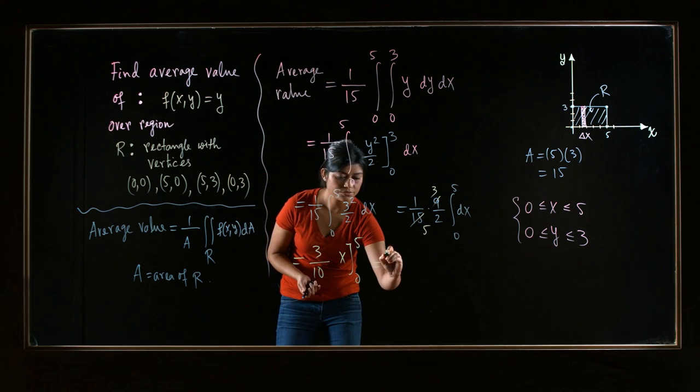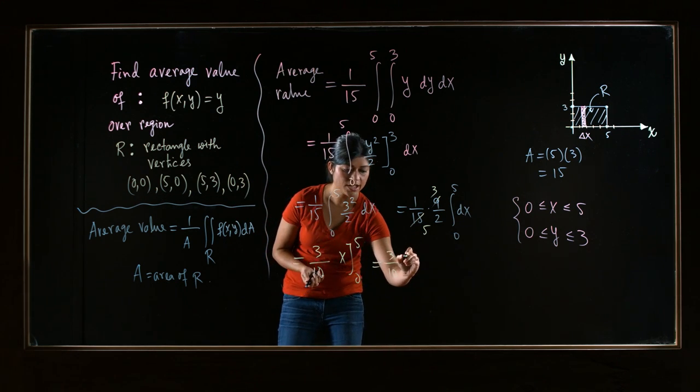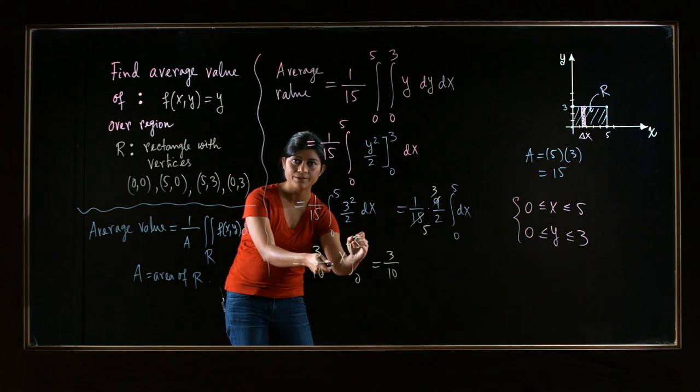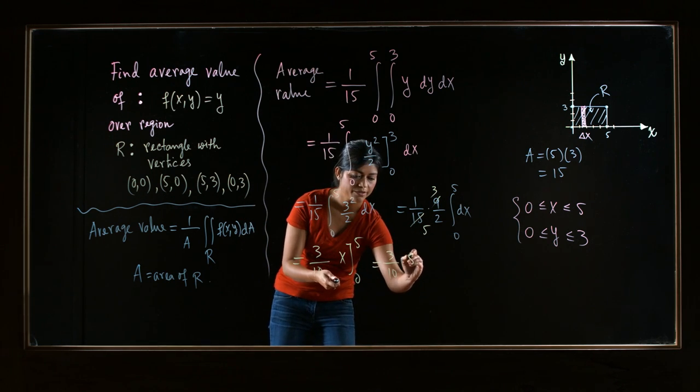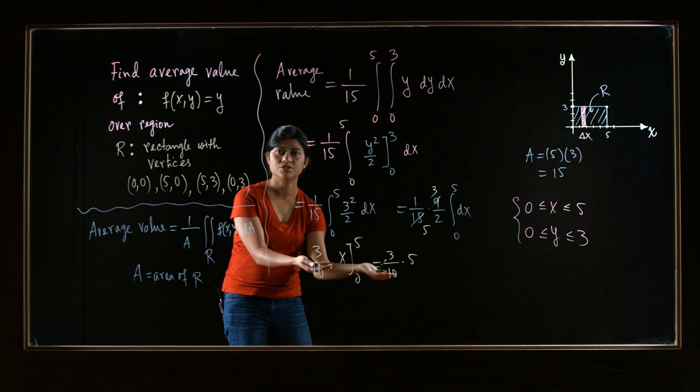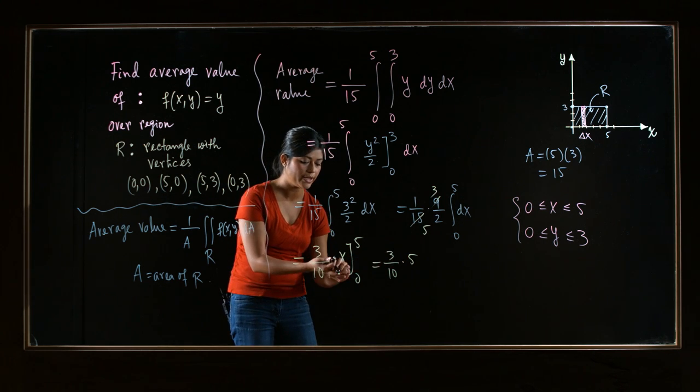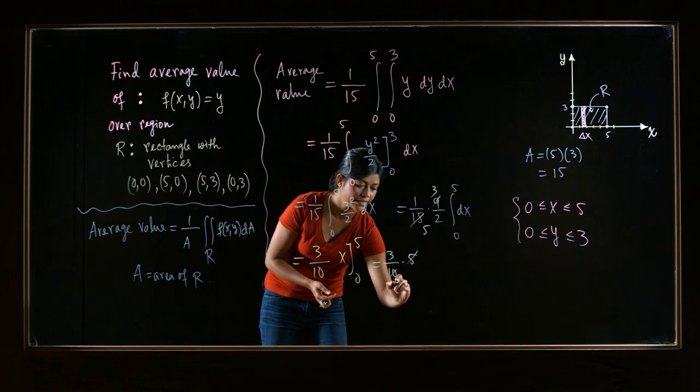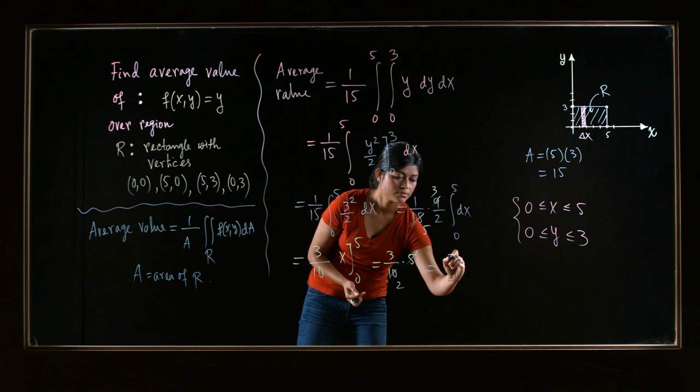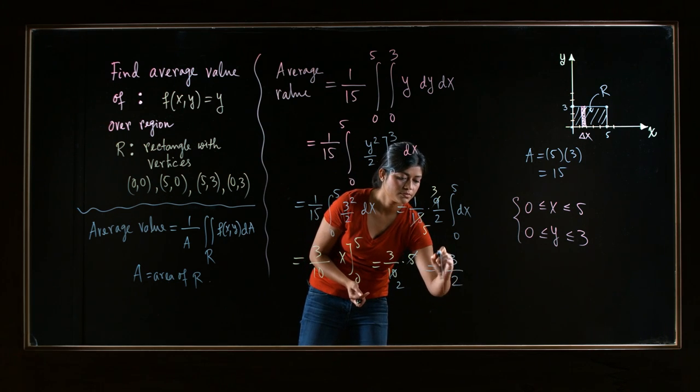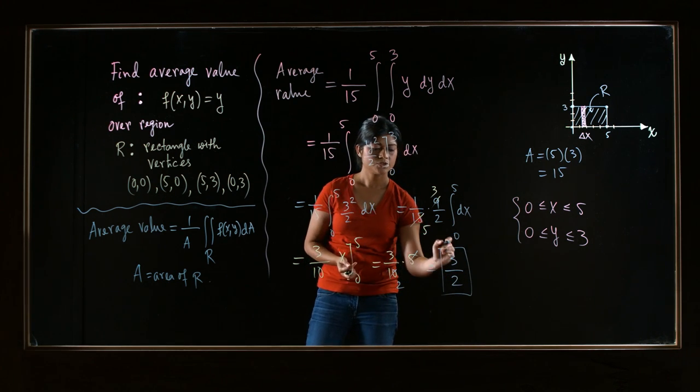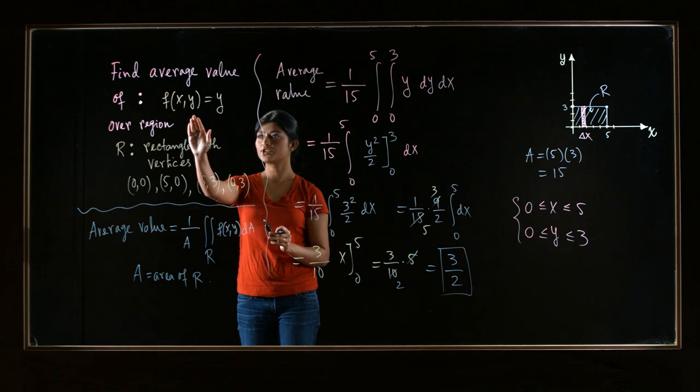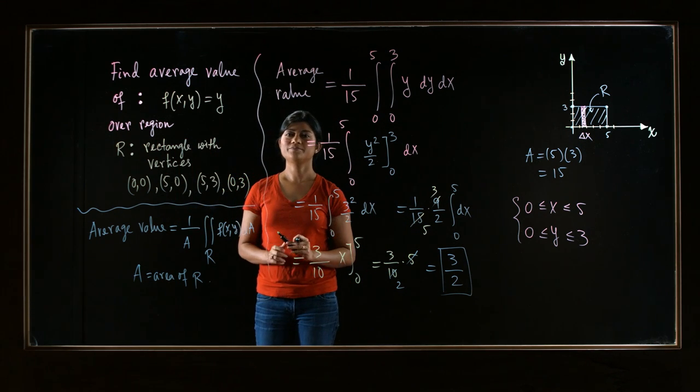So 3/10 times, okay, when you plug in 5 first, you just have 5. When you plug in 0, just have 0, nothing. You can ignore that. And then 5 and 10 cancels. So the answer is 3/2. So 3/2 is the average value of this function over this region.